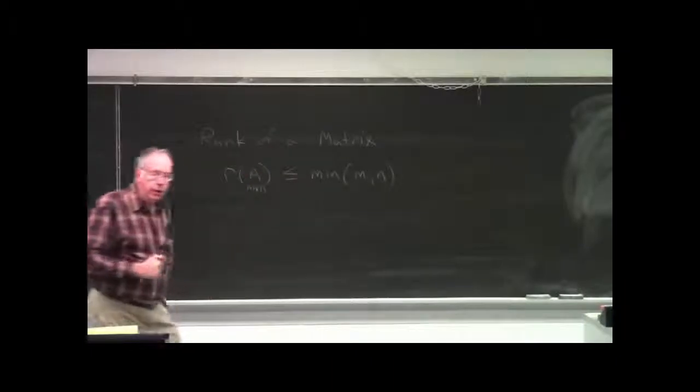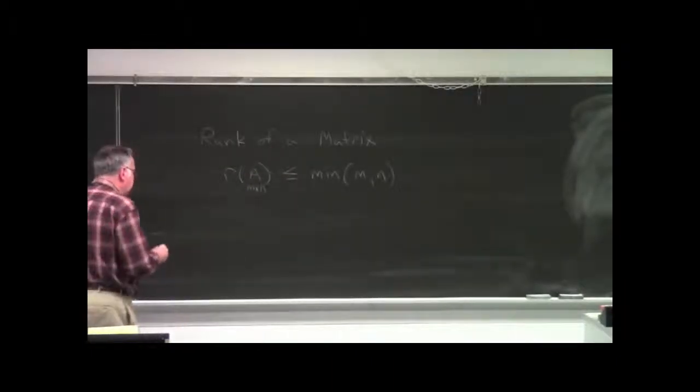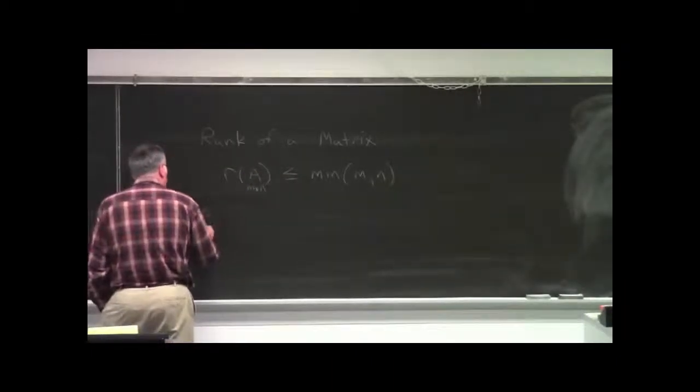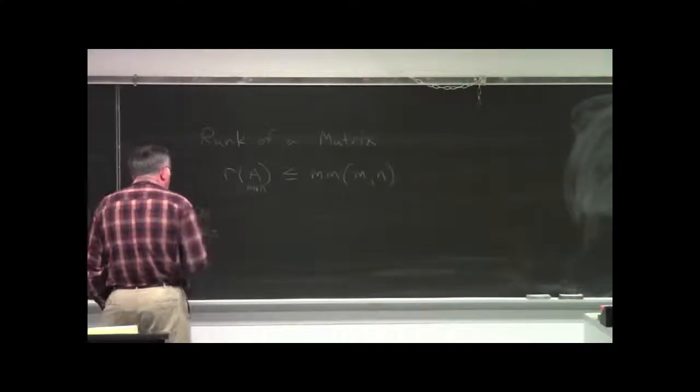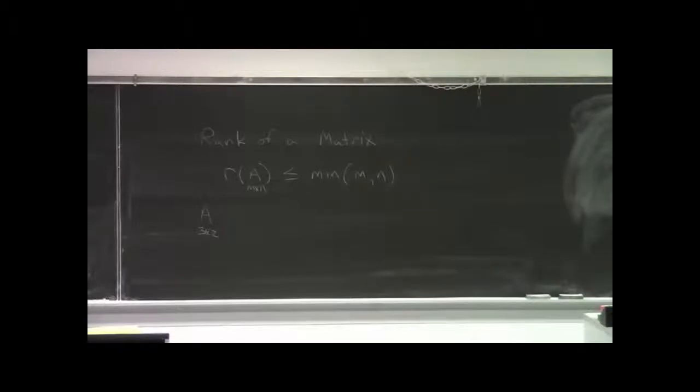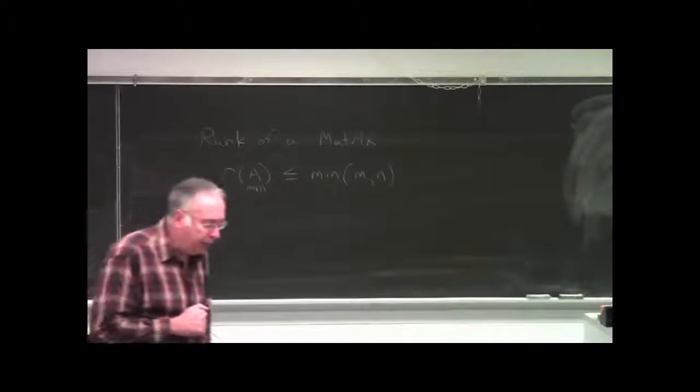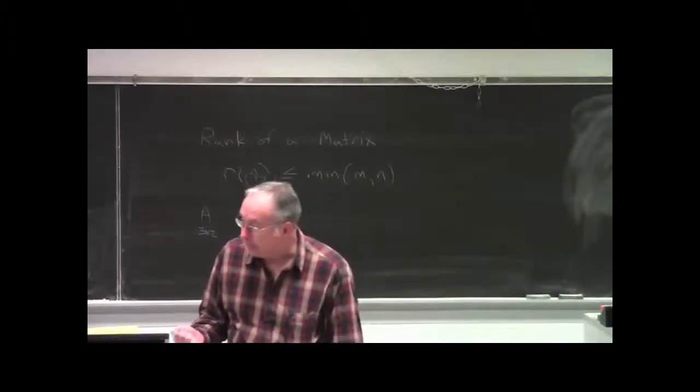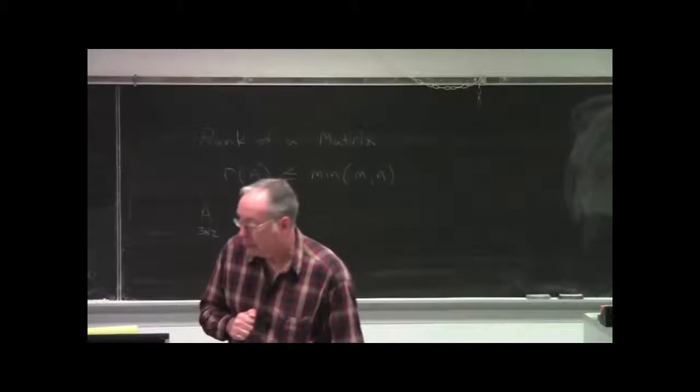For example, suppose A is a 3 by 2. Then the rank of matrix A can be at most what? 2. Whatever the smaller number is. So, the rank of matrix A could be at most 2. It could be less than 2, but at most it could be 2.